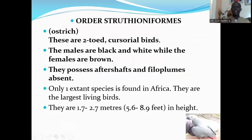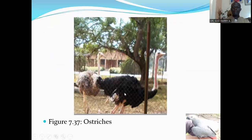The next order is Order Struthioniformes, which consists of the ostriches. These are two-toed cursorial birds. The males are black and white while the females are brown. They possess aftershafts and fill plumes are absent. Only one extant species is found in Africa. They are the largest living birds, 1.7 to 2.7 meters in length, that's 5.6 to 8.9 feet in height. Here are the ostriches found in Africa.